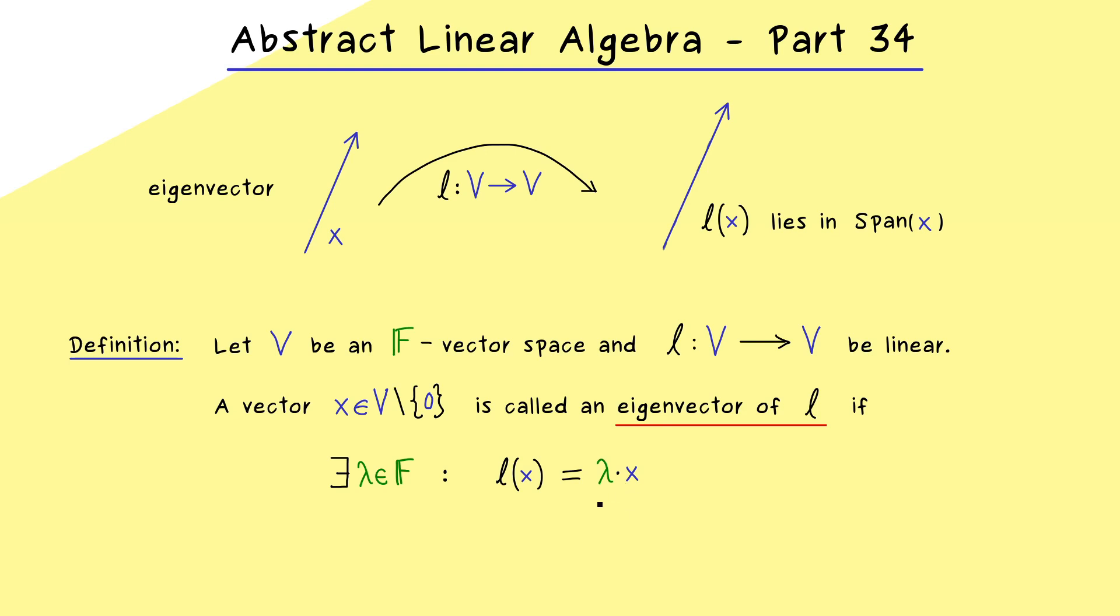where lambda is called the corresponding eigenvalue. To be precise we could say this is the eigenvalue of the linear map L associated to the eigenvector x. And here it's always important to point out that there is no restriction for the eigenvalue in the field. Any number in the field can be an eigenvalue of the linear map L, including zero.